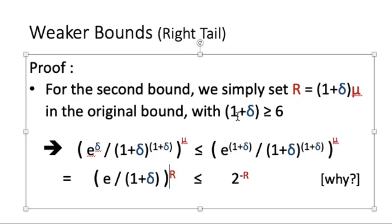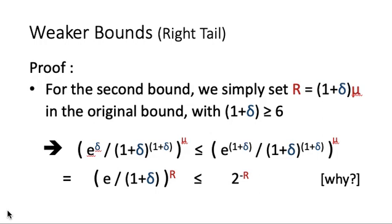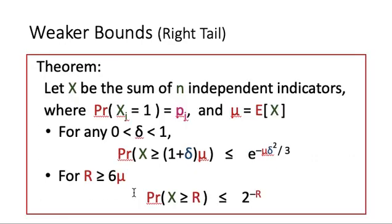Since (1 + delta) is at least 6 and e is approximately 2.7, the ratio e divided by (1 + delta) is less than or equal to 1/2. That is why we get 2 to the power minus R as our bound. This bound works when the value of R is very large, while the first bound works when delta is small.